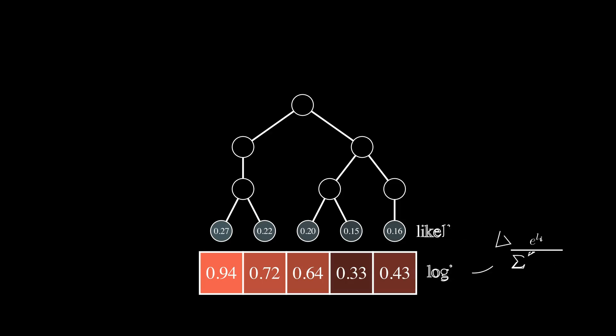Then we begin to propagate the likelihoods up the tree, assigning each node a likelihood that equals the sum of its children's likelihoods. Notice how they still sum to one at each level.